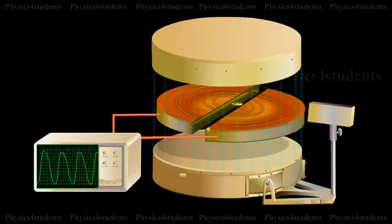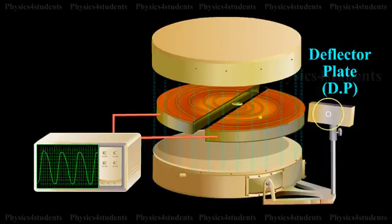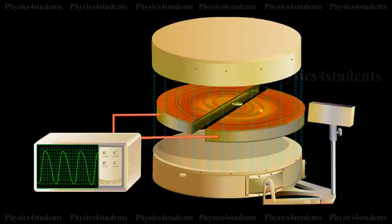Thus, the particle moves in a spiral path of increasing radius and when it comes near the edge, it is taken out with the help of a deflector plate Dp. The particle with high energy is now allowed to hit the target T.